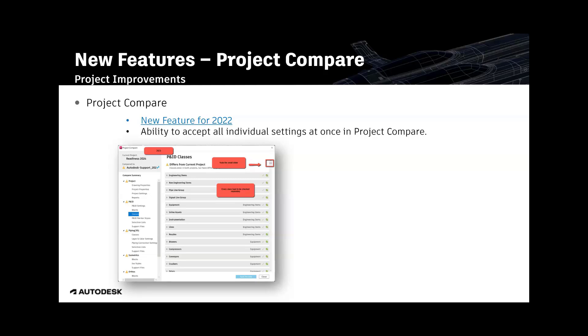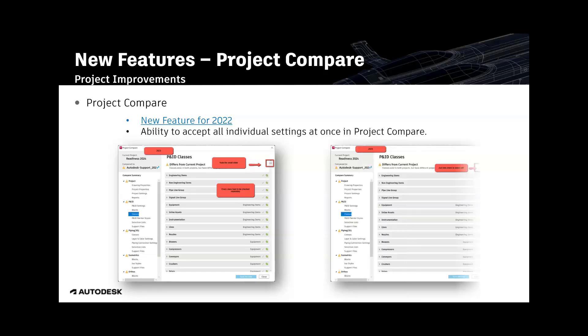So this would take a long time just to set the checkbox for every class. I have spent more than one hour just checking the boxes manually. But in 2024, there is just this single checkbox added. If you check that, you are saving one or more hours of time. Just set this one hook and everything is checked, and you can run the project compare. This is a small new feature but with a huge impact.